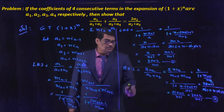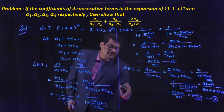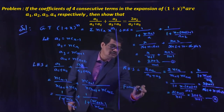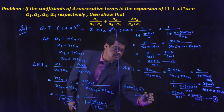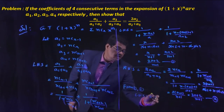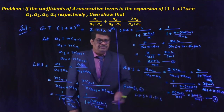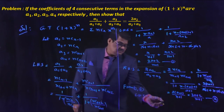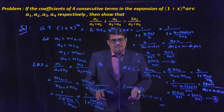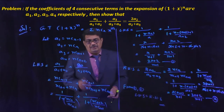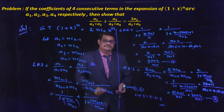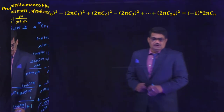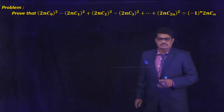From equations 1 and 2, LHS = RHS = (2r+2)/(n+1). Hence the result is proved. See the next problem.